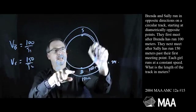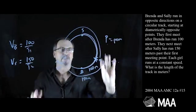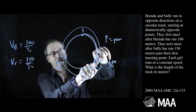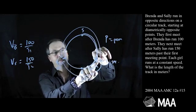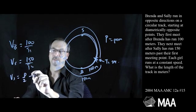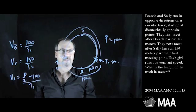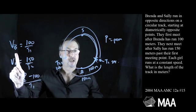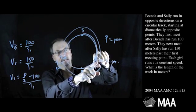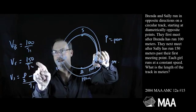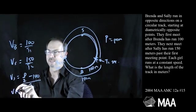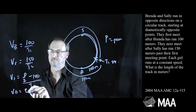Let's call the length p for perimeter — or c for circumference. In the first t1 seconds, Brenda runs 100 metres and Sally runs half the perimeter minus 100 metres. So Sally's velocity is also (p/2 − 100) metres in t1 seconds — getting more equations. And for t2 seconds, Sally runs 150 metres in t2 seconds. But Brenda runs the full circumference minus 150 metres in t2 seconds, so Brenda's velocity is also (p − 150) over t2 seconds.